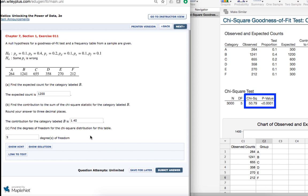If we were asked to make a conclusion, because our p-value is less than the standard alpha level of 0.05, we would reject the null hypothesis. There is evidence that one of those p sub i's in the null hypothesis is incorrect.